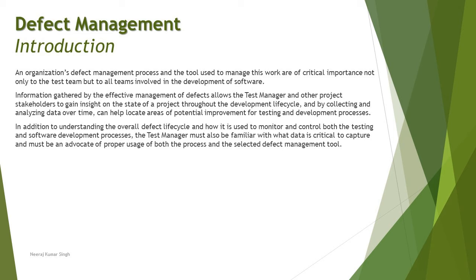Information gathered by effective defect management allows the test manager and other project stakeholders to gain insight into the state of a project throughout the development life cycle. Collecting and analyzing data over time can help locate areas of potential improvement for the testing and development process. In addition to understanding the overall defect life cycle and how it monitors and controls both testing and development, the test manager must also be familiar with what data is critical to capture, and must be an advocate of proper usage of both the process and the selected defect management tool. The test manager plays a critical role in managing defects and determining what metrics and details need to be captured whenever a defect is identified.